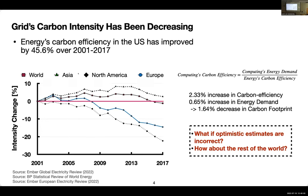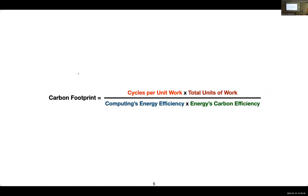This is good news, but only if the most optimistic estimates about energy demand are accurate, and only if you look at the United States or Europe where carbon intensity has been decreasing. If you look at Asia, where there has been massive growth in data center capacity, the grid's carbon intensity has either increased or remained constant. When you combine the global view with potential inaccuracies in energy demand estimates, the future does not look as rosy.